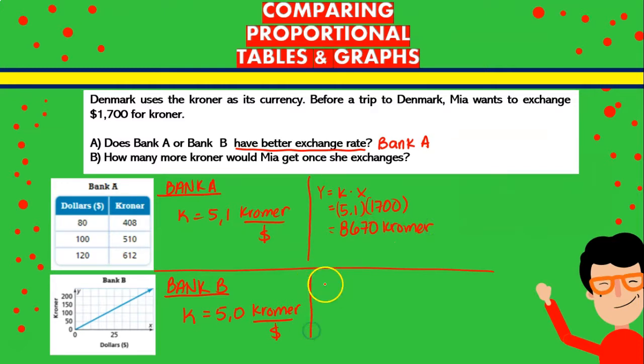Meanwhile, if we exchange on the other bank, in Bank B, our value for k is going to be just 5. So when we multiply 5 times 1,700, our value is going to be 8,500 kroner.